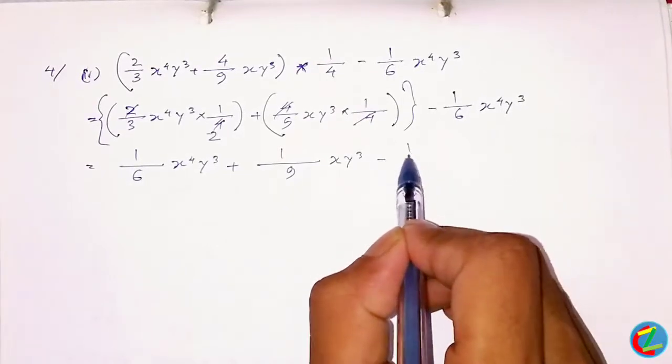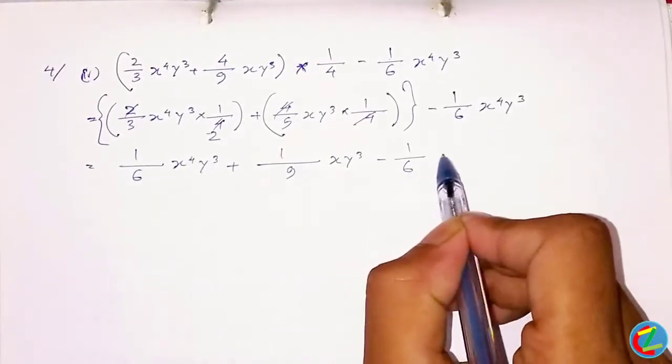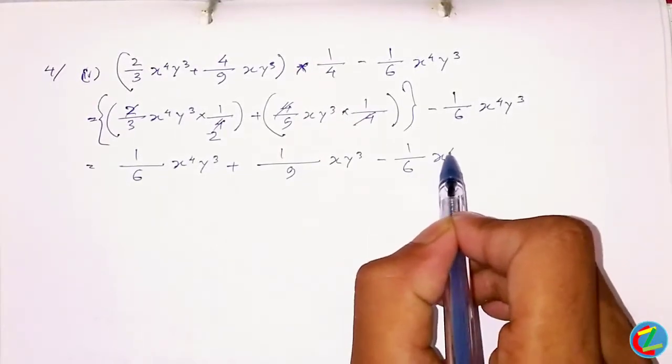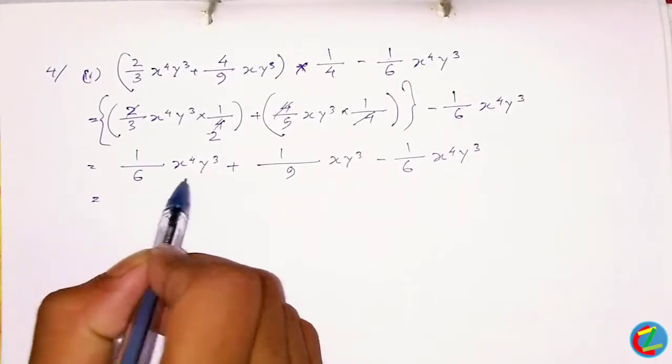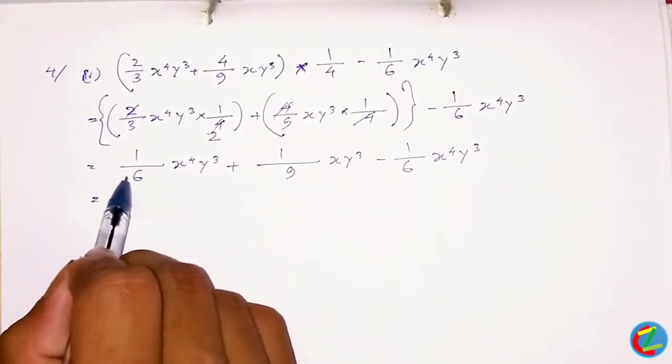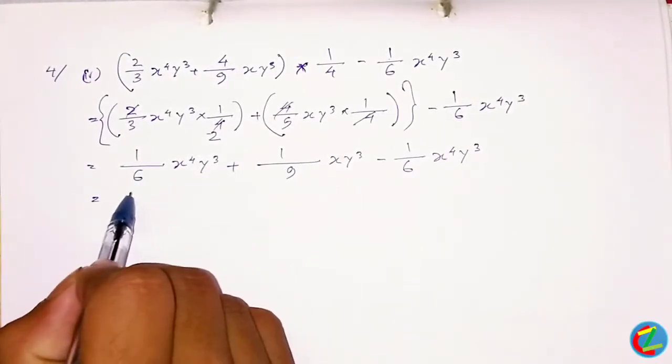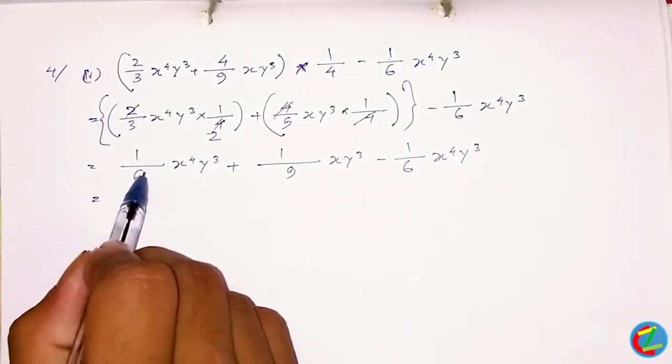This is minus 1/6 x^(3/4) y^(2/3). It's not worth 1/6 x^(3/4) y^(2/3). Then we can add 1/6 x^(3/4) y^(2/3).